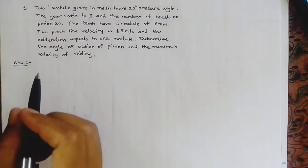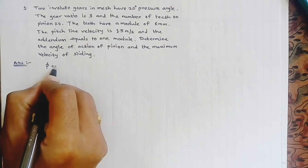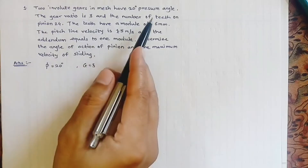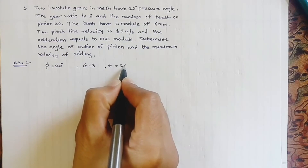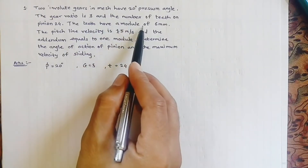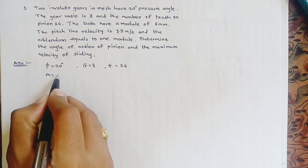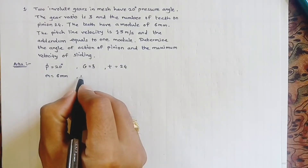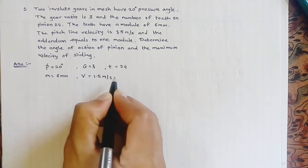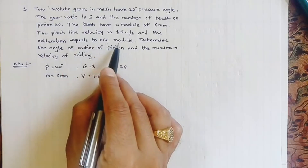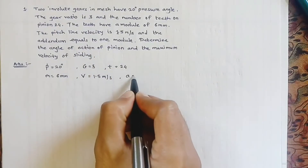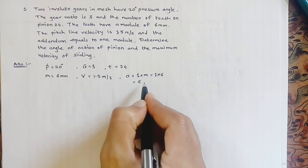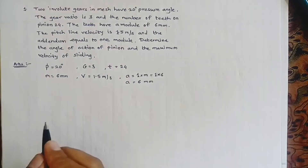Today we are going to solve a problem on gears. Two involute gears are given whose pressure angle phi is 20 degrees. The gear ratio is 3, the number of teeth on the pinion is 24, the module m is 6 mm, the pitch line velocity V is 1.5 meters per second, and the addendum is 1 times the module, so addendum coefficient is 1, giving an addendum of 1 × 6 = 6 mm.